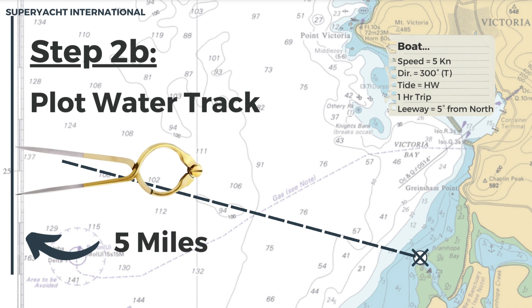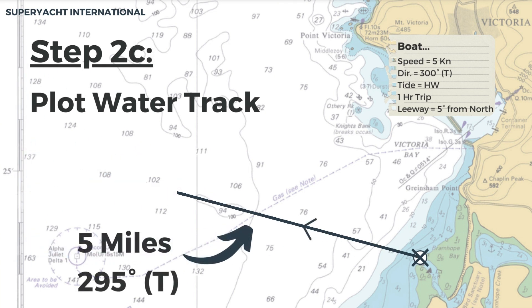Using your dividers and the latitude scale, measure 5 miles. It is important to use the latitude scale and not the longitude. Bring these two pieces of data together and plot the water track for the hour. Label the track with a single arrow to represent the water track.